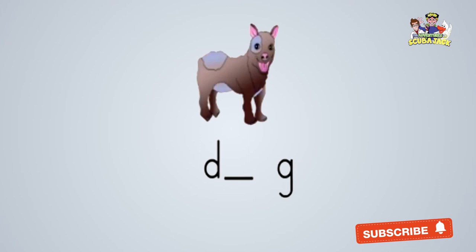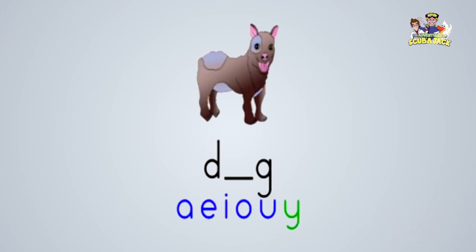This is a dog. Can you say dog? Dog. What's the missing vowel? Yes, that's right. The missing vowel is O.